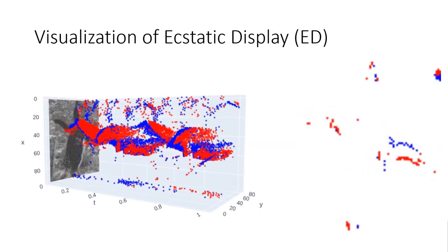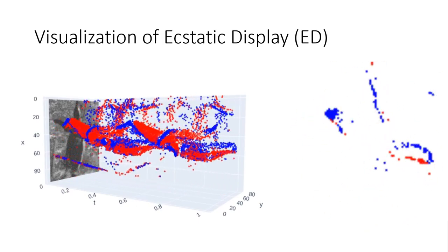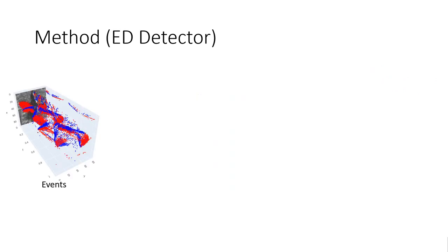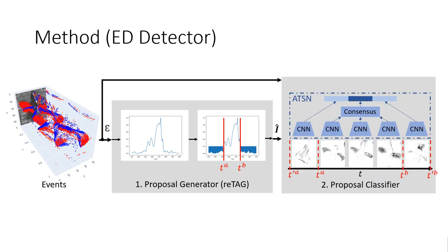The task is performed on cropped events for single nests. We see a visualization of an ecstatic display captured with an event camera. Our method consists of two steps: the input is the cropped events of one nest. In the first step, time intervals of interest are determined based on the event rate. In the second step, each proposal is classified as ecstatic display or background by an artificial neural network, which takes event histograms sampled from different time steps within the proposal and outputs a classification score.